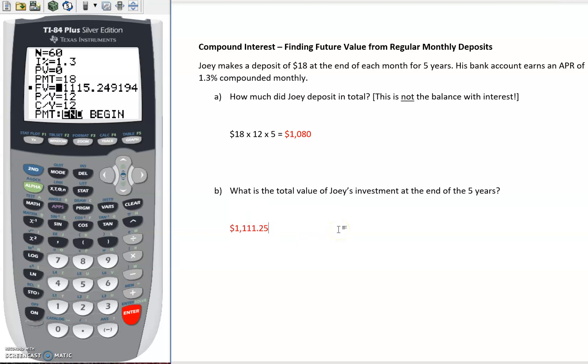You know, from here we could also ask a question like: how much interest did we earn during the course of these five years? Well, if Joey put in $1,080 and we have a total value of $1,111.25, the only thing that differs between those is how much interest we gained.